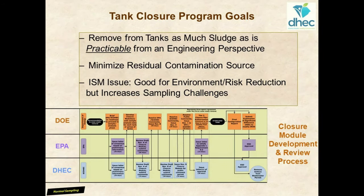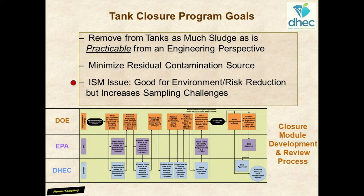Tank closure program goals are relatively straightforward as this is largely a source control effort. The goal is to remove by pumping the maximum amount of sludge practicable — going the extra mile, not stopping at what is normal, convenient, or usual. This extra effort minimizes the amount of residual radioactive source material in the tank. Interestingly, exceptional success in sludge removal can impact ISM goals, as thin veneers of residual material present challenges to in-tank sample collection, potentially impacting laboratory quality goals due to a lack of material. However, having minimal source material is probably the lesser of two evils.